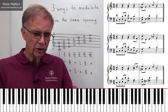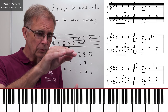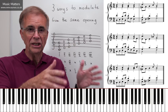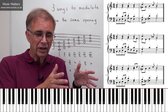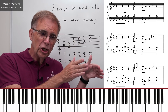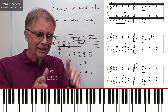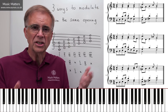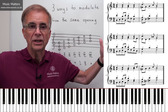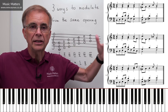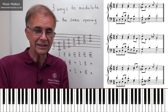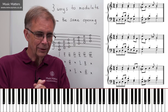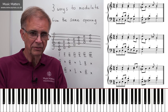Comparing example one with example two: the modulation into G major in number one happens a little earlier than the modulation into F major in example two — just to show that you can spread it over a slightly bigger space or compact it, but the process is still the same. We still need to use a pivot chord.